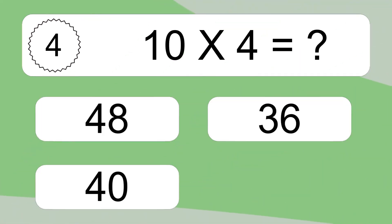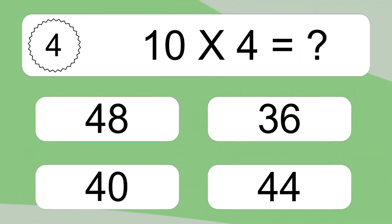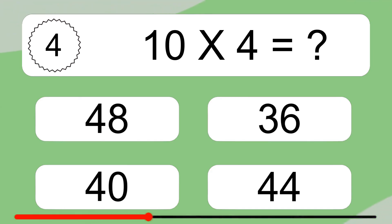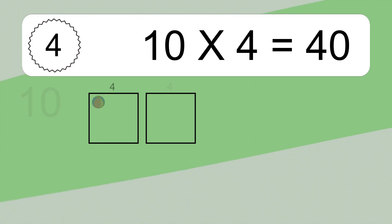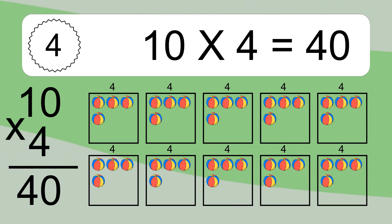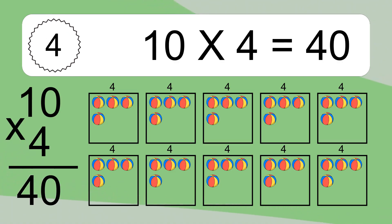10 times 4 equals what? 10 times 4 equals 40. We have 10 boxes, and each box has 4 colorful balls inside. If you count all the balls in all the boxes together, you will have 10 times 4 balls. This equals 40 balls.